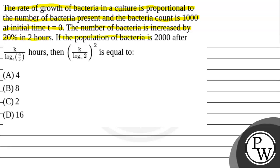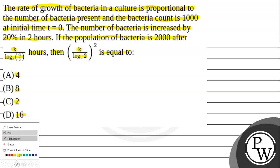If the population of bacteria is 2000 after k upon log(6/5) base e hours, then k upon ln(2) whole square is equal to: option A: 4, option B: 8, option C: 2, option D: 16. Let's see the solution.